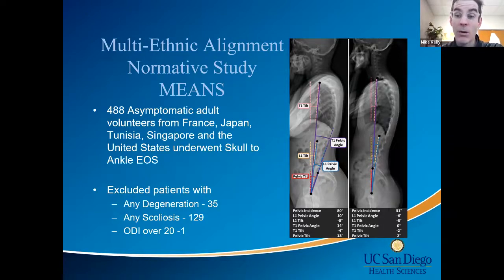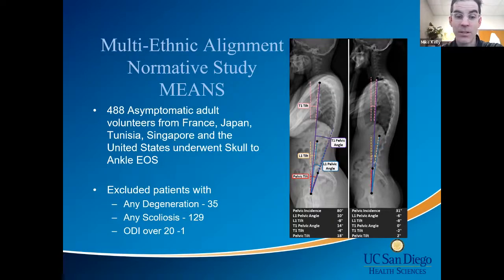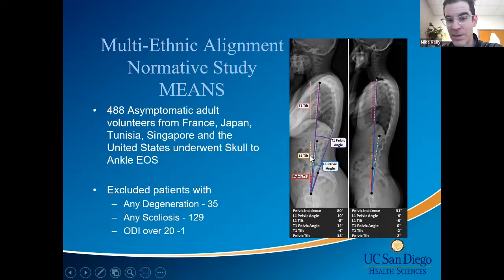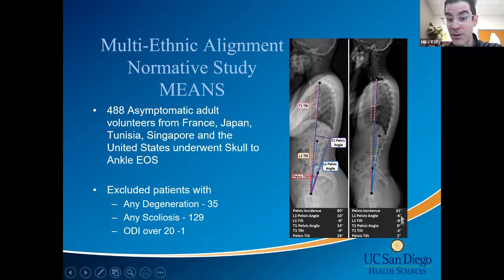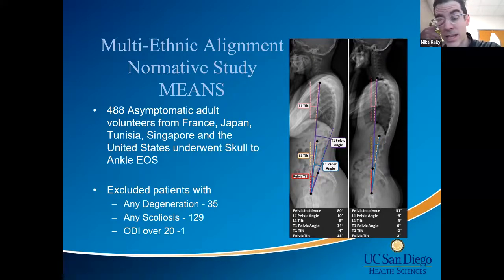The GAP study shows that as you become more malaligned, you do more poorly. My goal with the MEANS study — a multi-ethnic alignment normative study from five countries — was to look at normal alignment. I eliminated everyone with any suspicion for degeneration: any loss of disc height, end plate sclerosis, scoliosis, or ODI greater than 20. One finding: people try to stand with the same vertebral body tilts regardless of PI. The L1 tilt for a PI of 80 is −8 degrees; for a PI of 31, also −8 degrees.